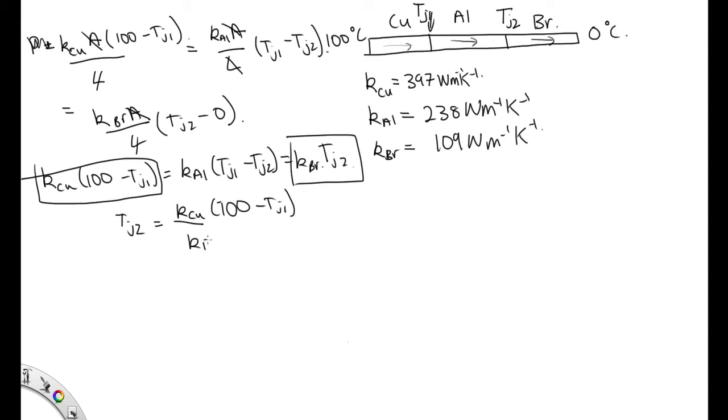If we wanted to put in numbers, K for copper is 397. So this is 397 over 109, 100 minus TJ1.